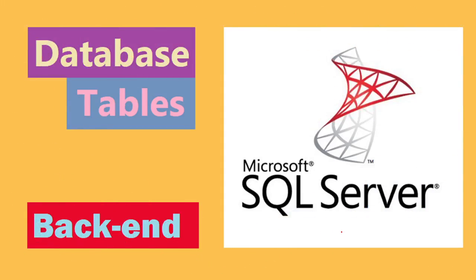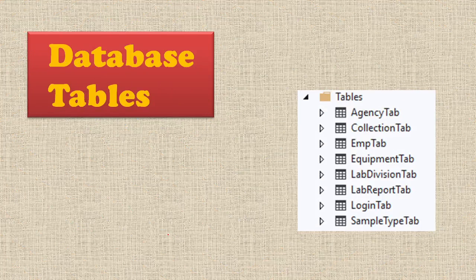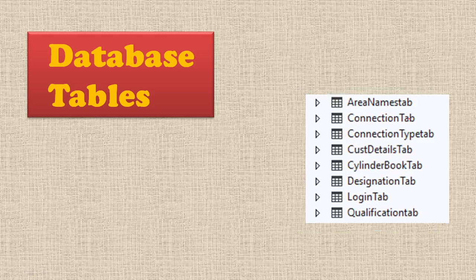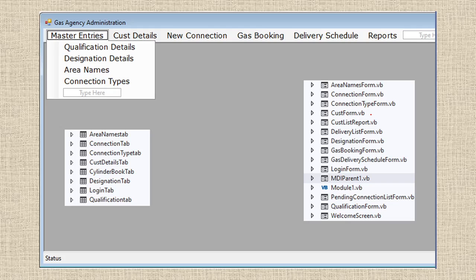For the database tables, we are using Microsoft SQL Server as a backend, and we created all the tables there. We have eight tables: agency tab to store agency details, collection tab to enter collections, employee table to store employee details, area name, connection tab, connection type tab, customer details tab, cylinder booking tab, designation tab, login table, and qualification table. Via the menu you can navigate to the forms, which map to these tables.